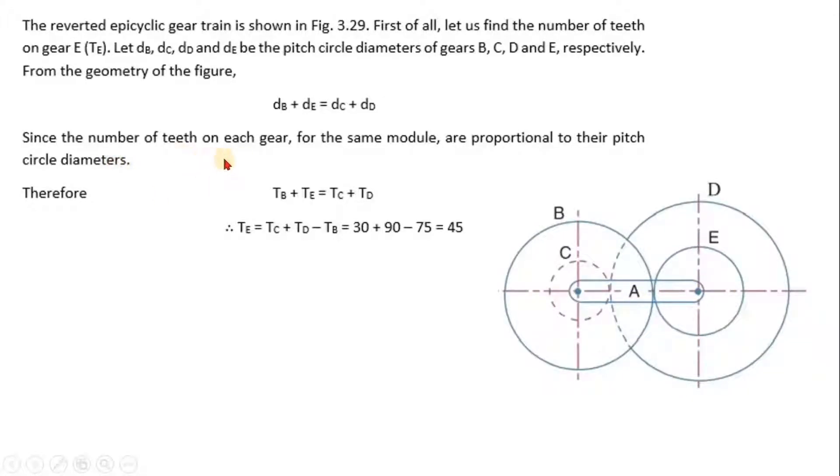Therefore TE is equal to TC + TD - TB, so 30 + 90 - 75 and that is 45.